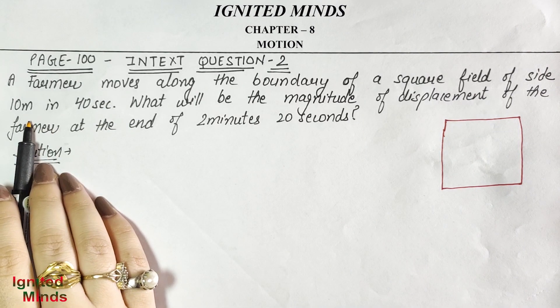In the last 20 seconds, the farmer moves from A towards B, C — so the farmer goes from A to C. Now many students think the displacement is 20, but that is wrong. Displacement is the shortest path from the initial point to the final point, not the path traveled along the boundary. So displacement for the last 20 seconds is the straight line from A to C.